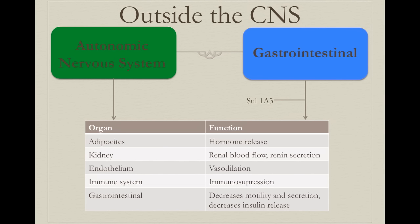Outside of the central nervous system, dopamine is also very important in the autonomic nervous system — we can synthesize it especially in the adrenal medulla. In adipocytes it controls hormone release; in the kidney it regulates renal blood flow and renal secretion. In the endothelium it causes vasodilation; in the immune system it causes immunosuppression; and in gastrointestinal tissues it decreases motility, secretion, and insulin release.